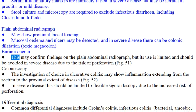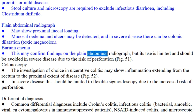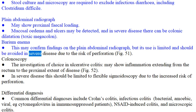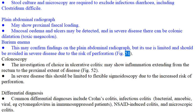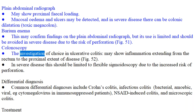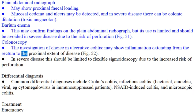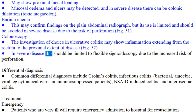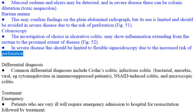Barium enema may confirm findings on the plain abdominal radiograph, but its use is limited and should be avoided in severe disease due to the risk of perforation (Fig. 51). Colonoscopy is the investigation of choice in ulcerative colitis and may show inflammation extending from the rectum to the proximal extent of disease (Fig. 52). In severe disease this should be limited to flexible sigmoidoscopy due to the increased risk of perforation.